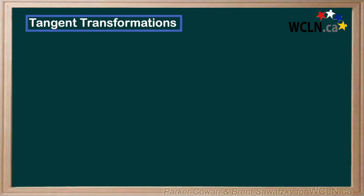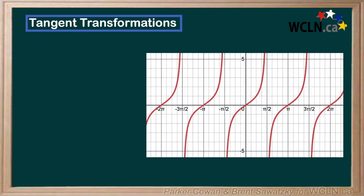Transformations with the tangent function are just like sine and cosine. However, sometimes it can feel a bit awkward since the period is different and the graph is a bit more complex. First, let's address the period of a tangent function. We already determined the period of tan to be pi, but what if we have a coefficient inside the brackets?